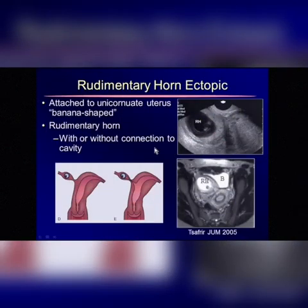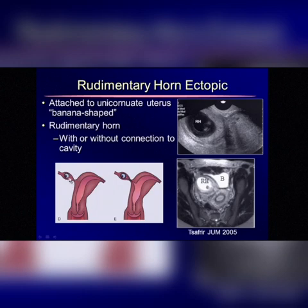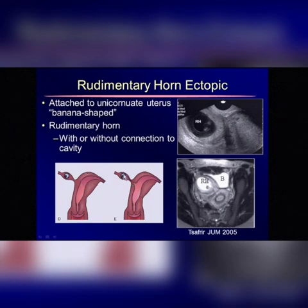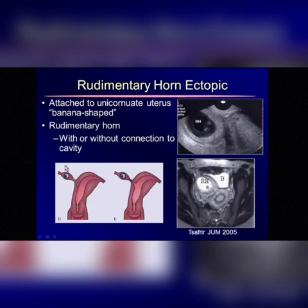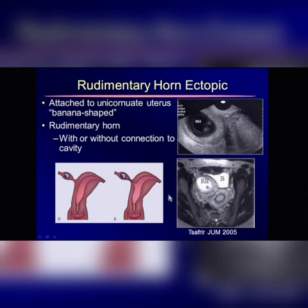Now the rudimentary horn ectopic pregnancy. The Müllerian defect here shows us that the second uterus that fuses together does not form — it's only in a rudimentary form. You get the unicornuate uterus, which typically has a banana shape. This little rudimentary horn could have a connection with the endometrial cavity — so patients can bleed vaginally — but it may not have a connection, in which case bleeding goes first into the peritoneal cavity and may not be discovered quickly. The pregnancy looks just like an ectopic growing in the tube and is hard to distinguish; MRI and 3D ultrasound can help give a clue.